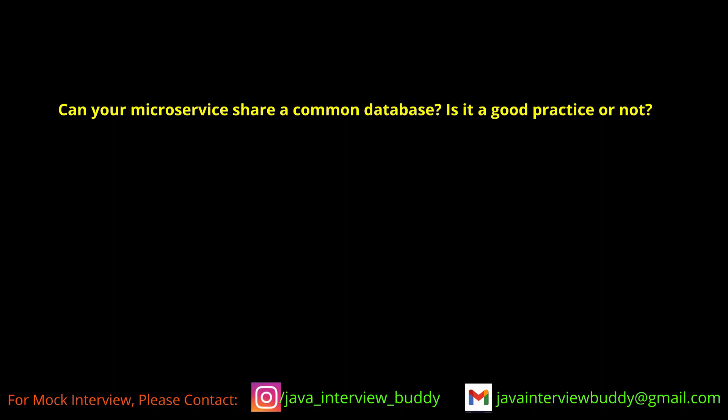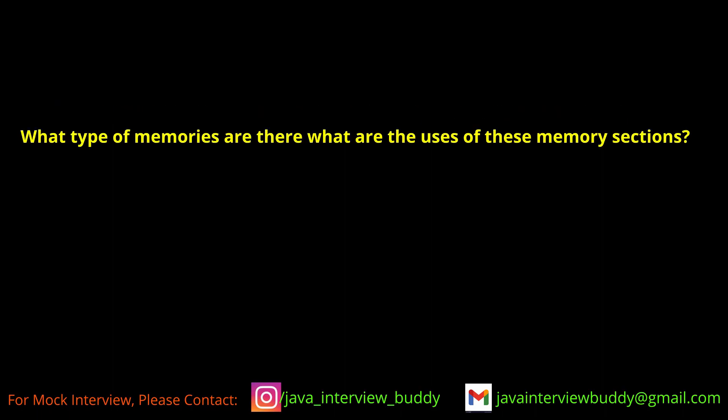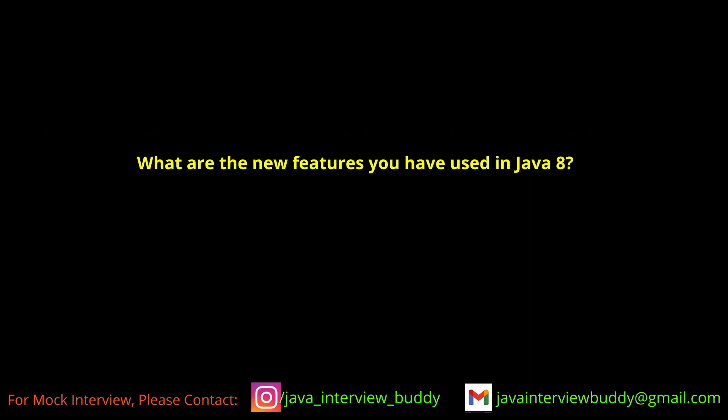What types of memory are there and what are their uses? There are stack and heap memory. In the stack, we keep references to variables declared in the program, and those references point to the string constant pool and heap memory. The stack stores only references, not actual data. The heap memory is where the actual data is stored.